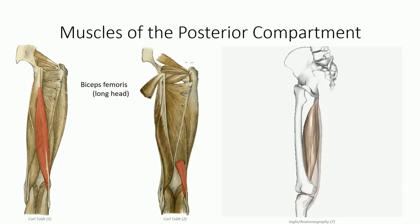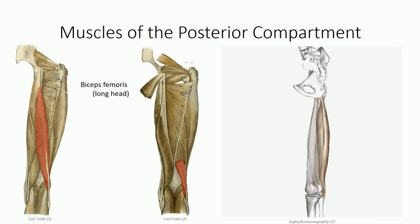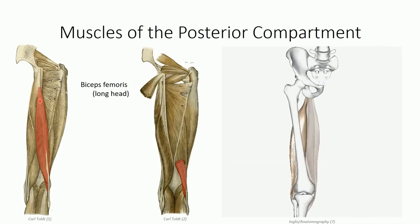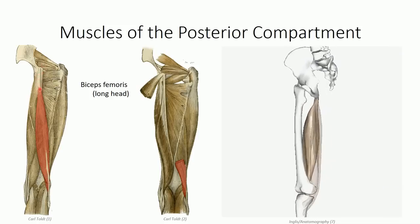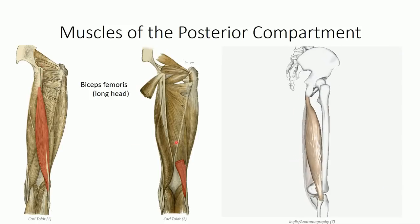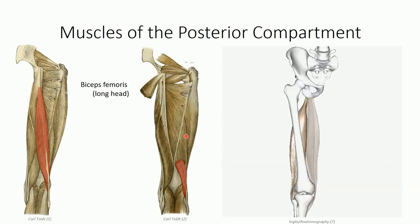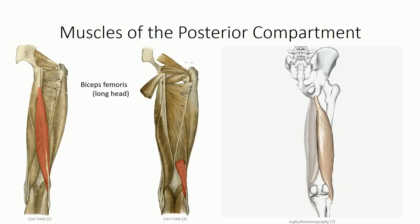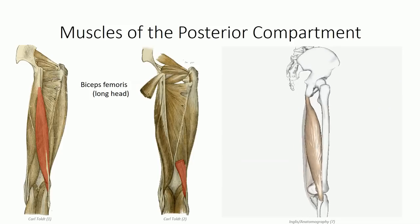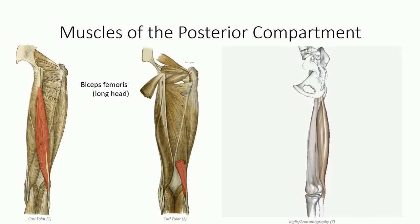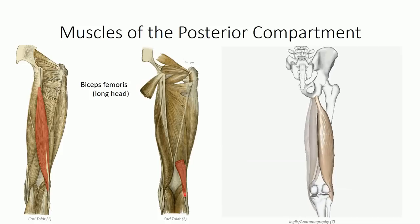The biceps femoris muscle is the lateral muscle in this posterior compartment. As the name implies, it is actually a combination of two separate heads. The long head originates with the semitendinosus and semimembranosus, and thus acts at both the hip and knee joints, whereas the short head acts on the knee joint exclusively. This distinction, as well as the fact that the two heads receive different innervation, mean that the short head is not considered part of the hamstring muscle group. We can feel this insertion as a single tendon, rather than as two distinct tendons as on the medial side.